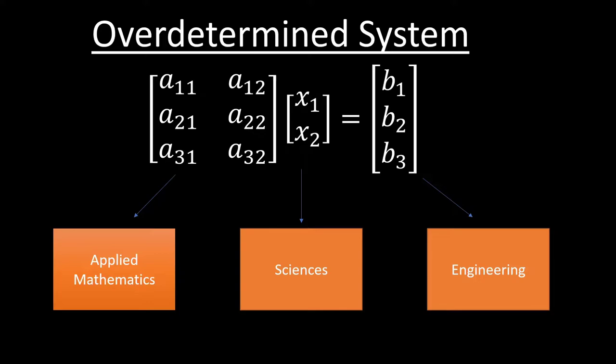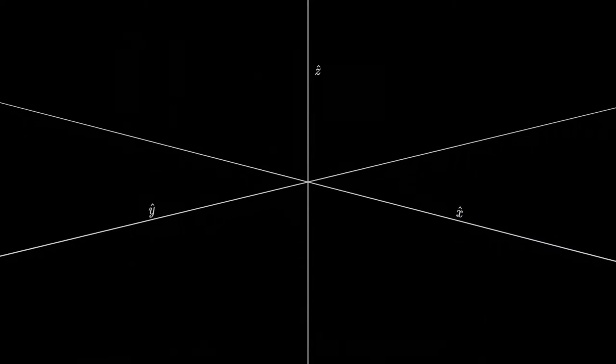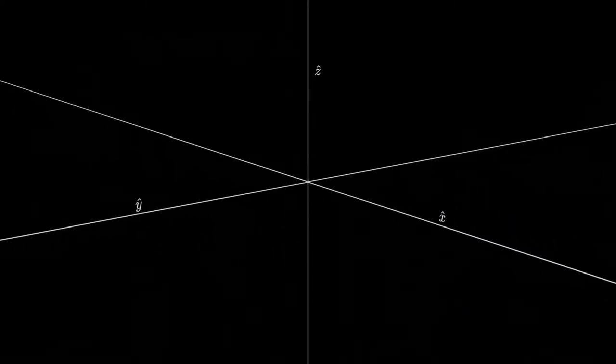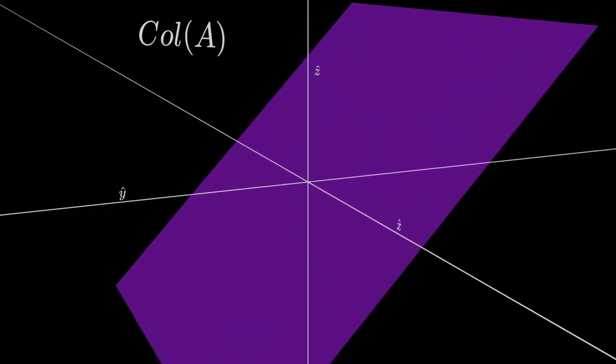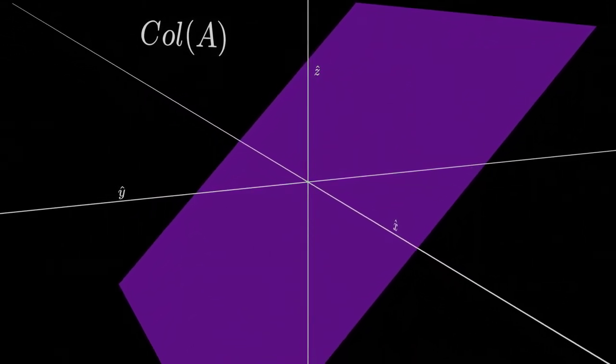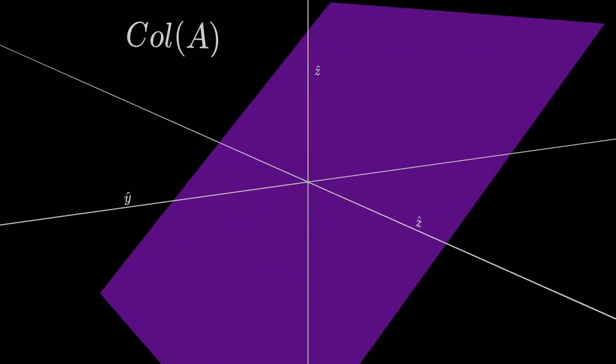But in order to understand the issue with the over-determined system, we're going to need to also understand what's causing this issue. To better understand this, we can take a look at the column space of our A matrix, which, if we're considering the 3x2 case, will be a two-dimensional plane in three-space.